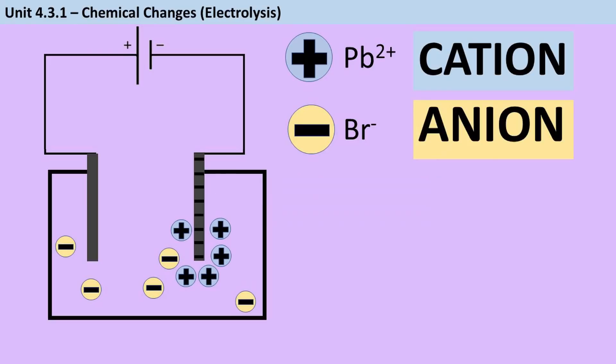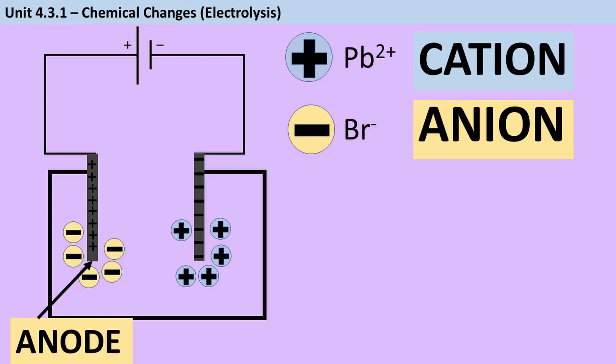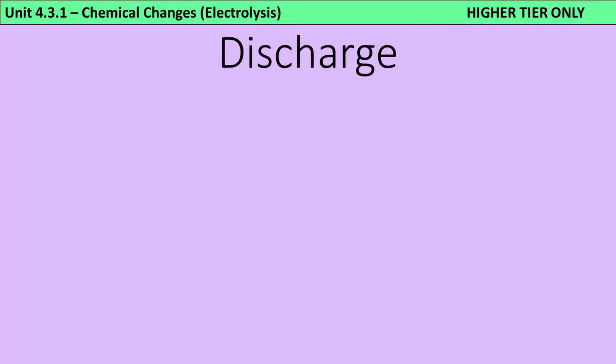Meanwhile, there are these negative bromide ions. We call these anions. Any negative ion is an anion. While the cathode is becoming negative, the other electrode is becoming positive and again opposites attract. So the anions go here. We call this electrode the anode. Now when these charged ions reach the electrodes, they're either going to gain or lose electrons and become uncharged. We call this process being discharged.